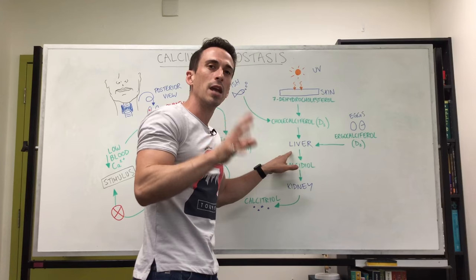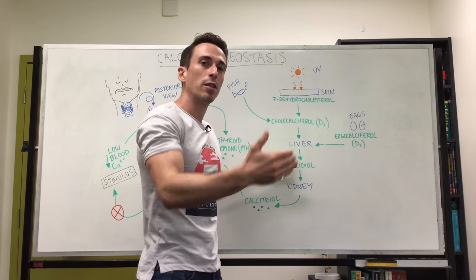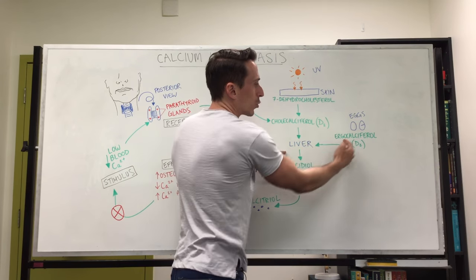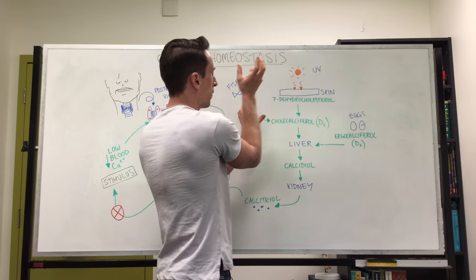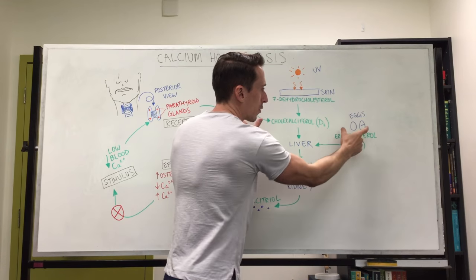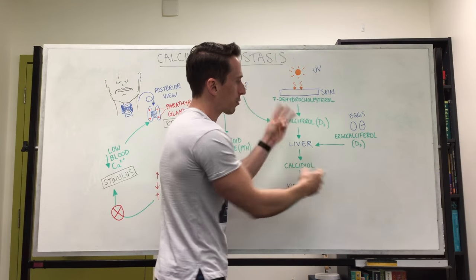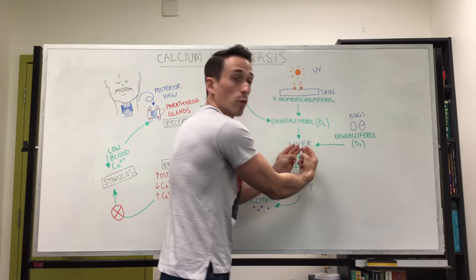Now we can also get another type of vitamin D from other foods such as eggs and that's called ergocalciferol. So we get cholecalciferol from the sun and from fish and we get ergocalciferol from eggs and so now we've got D3 and D2 both going to the liver.